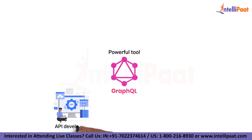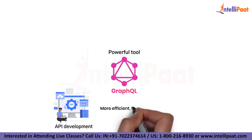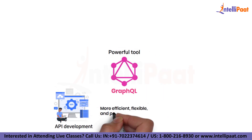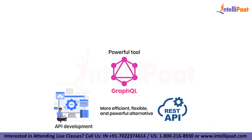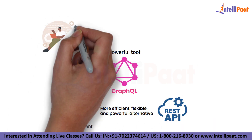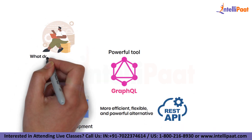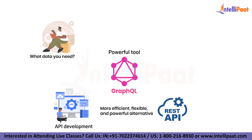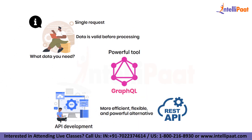GraphQL is a powerful tool for API development that provides a more efficient, flexible and powerful alternative to REST. With GraphQL, you can specify exactly what data you need, get all the information you need in a single request and ensure that the data is valid before processing it.